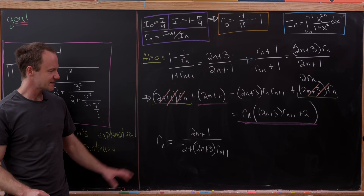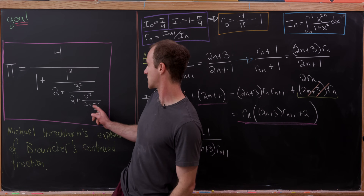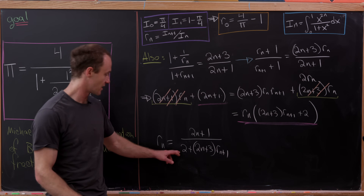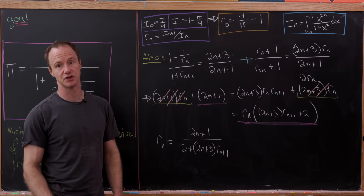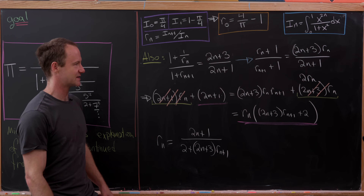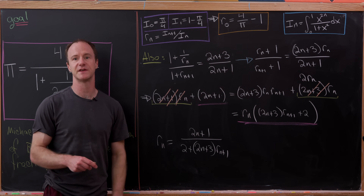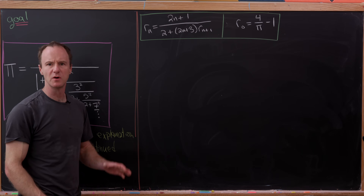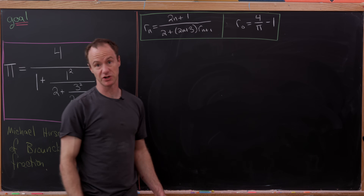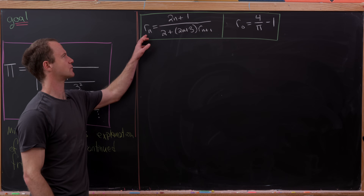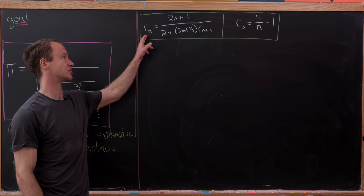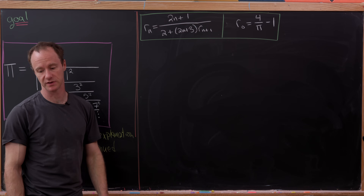This gives us a clear way to solve for r_n: r_n equals 2n+1 over 2 plus 2n+3 times r_(n+1). Notice that's going to be the seed for creating our continued fraction — we have these increasing odd numbers and the addition of 2.